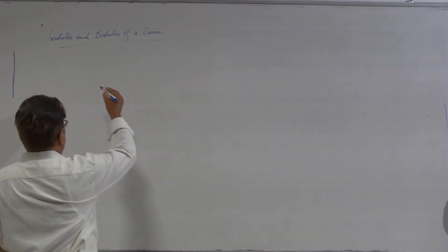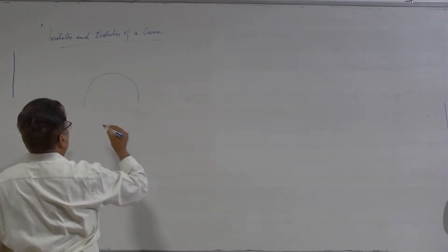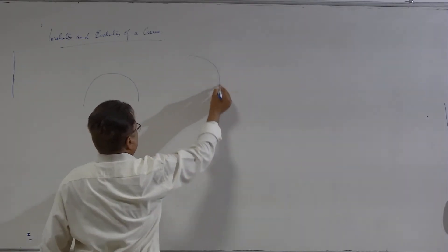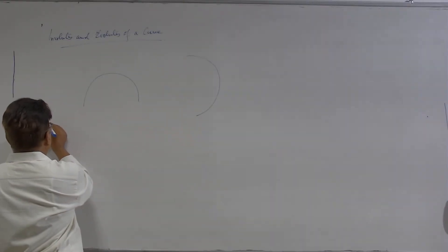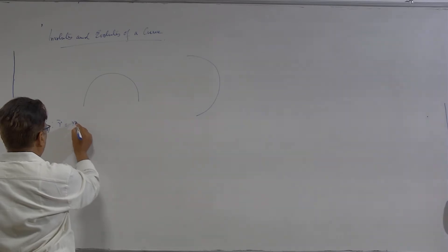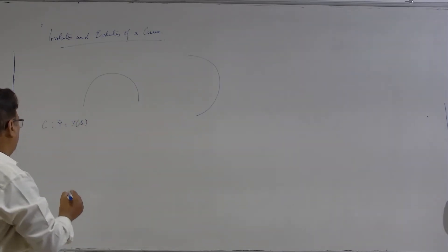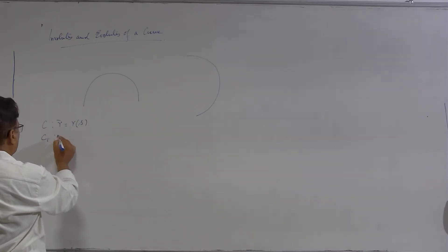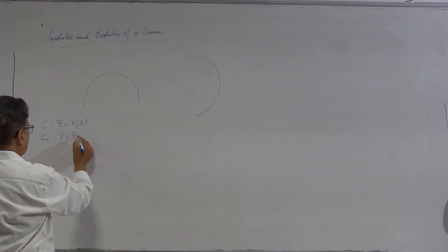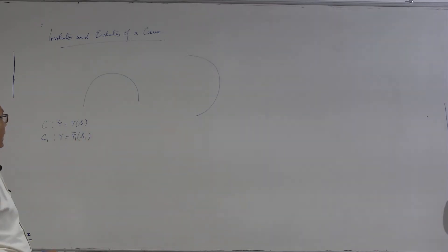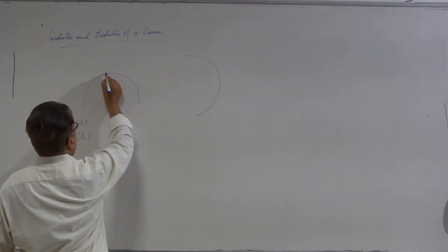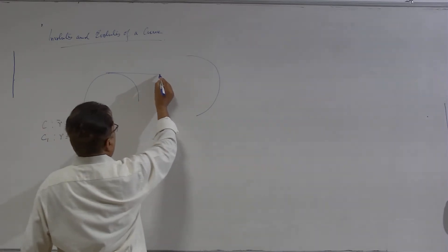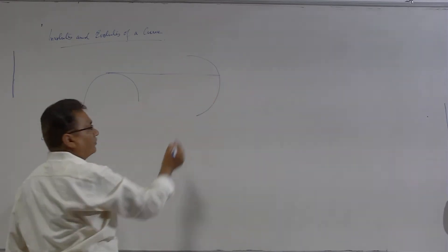More precisely, think of these two curves: one is like this and suppose the other one is this, and there is a 1-to-1 correspondence between the points of these two curves. The property is that for any point, if we draw the tangent, then this tangent is the normal for the second curve.